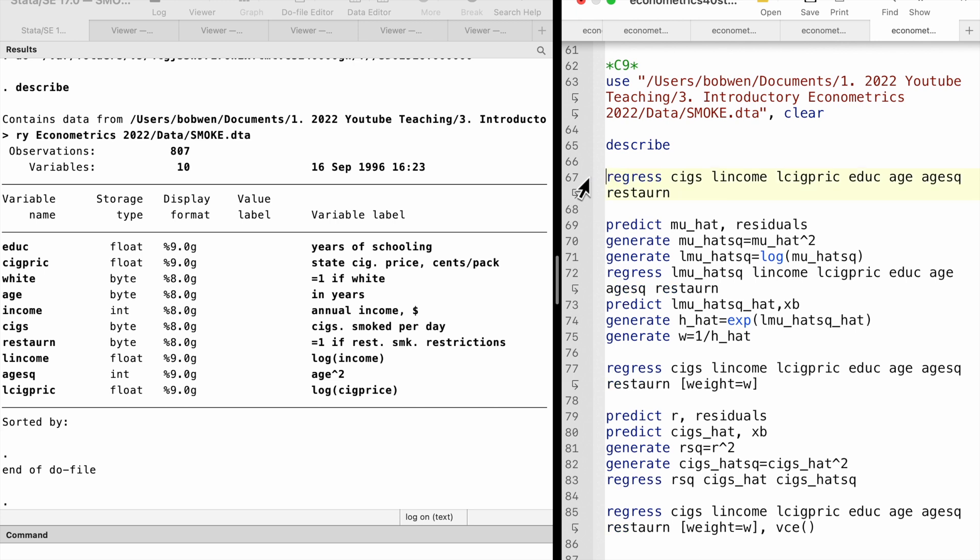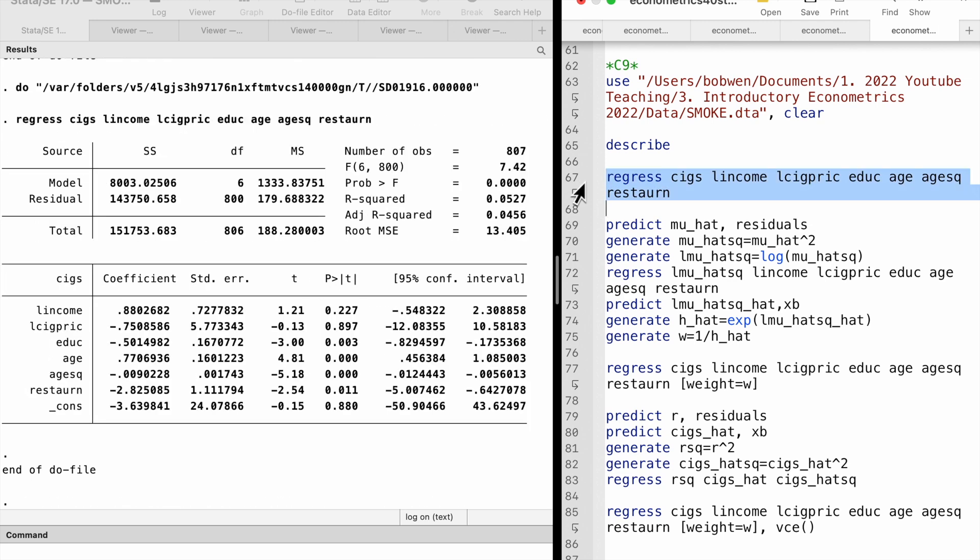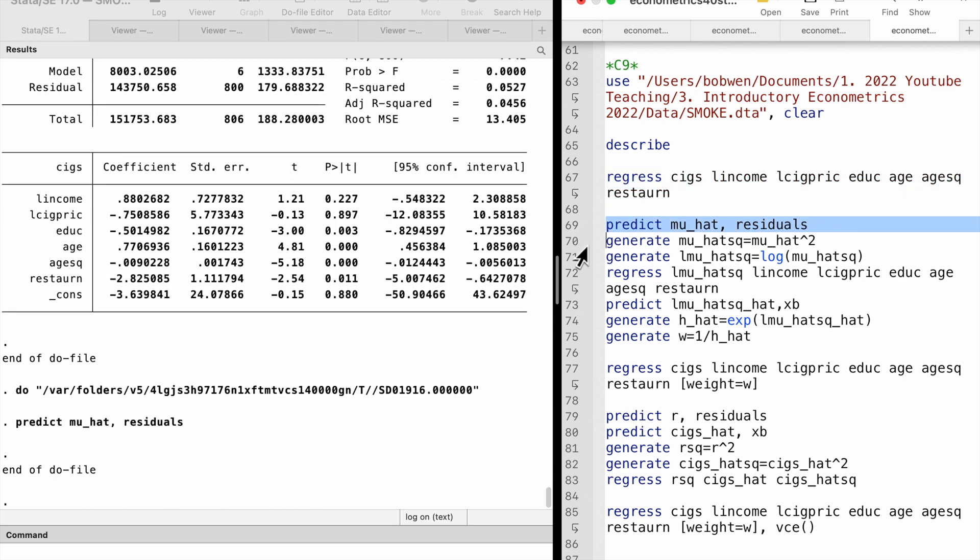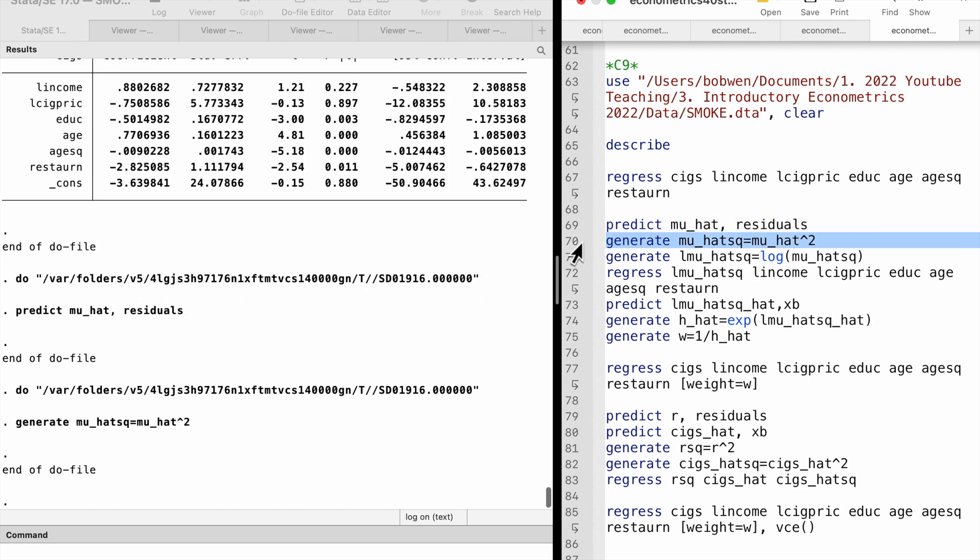In part 2, we follow the procedure of the feasible GLS to correct for heteroscedasticity. We first obtain the OLS residuals and then create the log squared residuals by squaring the OLS residuals and then taking the natural log.